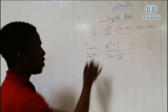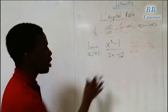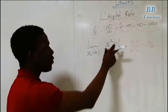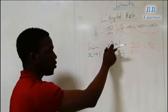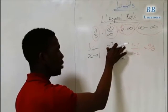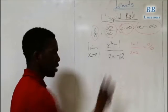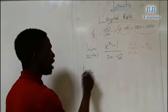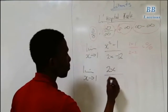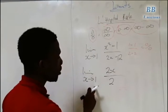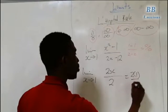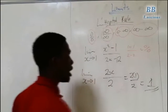What L'Hôpital's Rule says is: if you have anything like this, you find the derivative of the function individually. You don't use the product rule or quotient rule — you find the derivative of the numerator individually and the denominator individually. So for this case, we have limit as x tends to 1 of 2x over 2. When you substitute 1, you have 2(1) over 2, which equals 1.